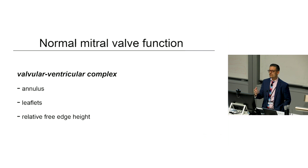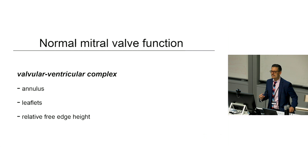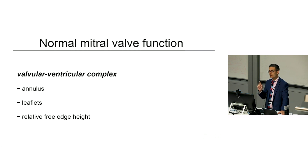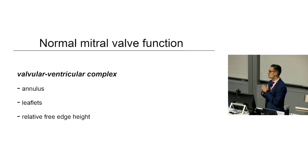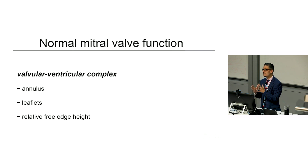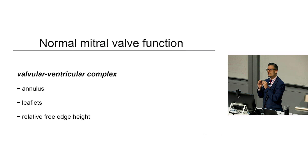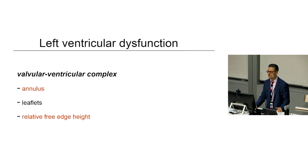Normal mitral valve function is dependent on the ventricular-valvular complex. The annulus and the leaflets play a role together. The main thing is a coaptation surface, so that during systole the mitral valve doesn't leak. You want a coaptation surface up to 8mm to a centimeter, and it's all based on the relative free edge height as well as the size of the annulus.